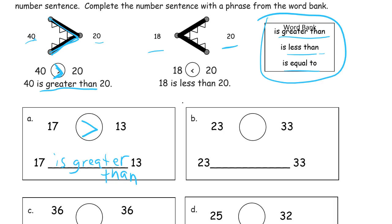23 and 33. Alligator eats the bigger number. We can't say 23 is equal to 33. We can't say it's greater than 33 because it's not. It's less than 33.